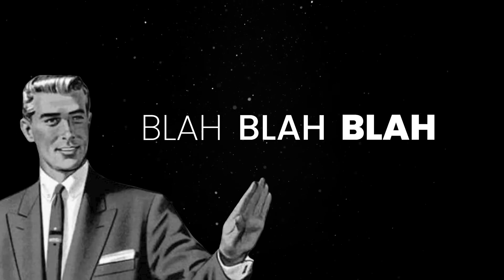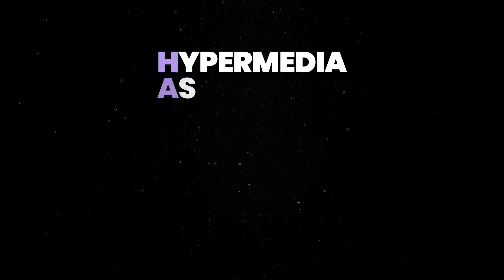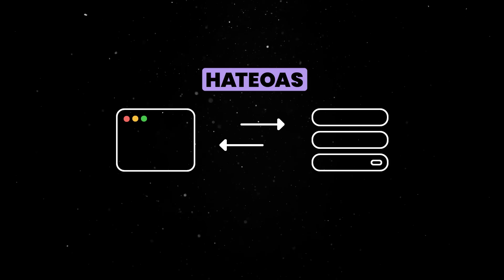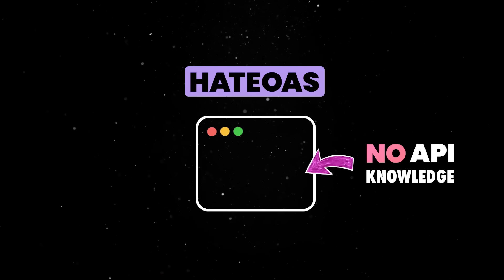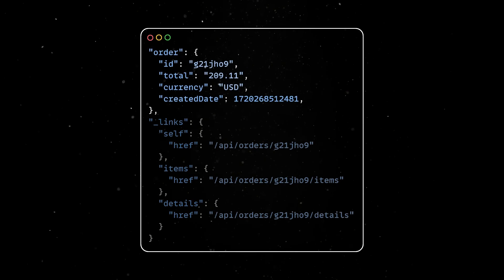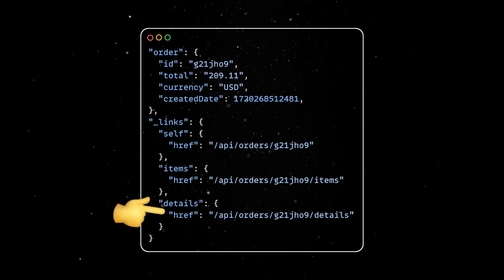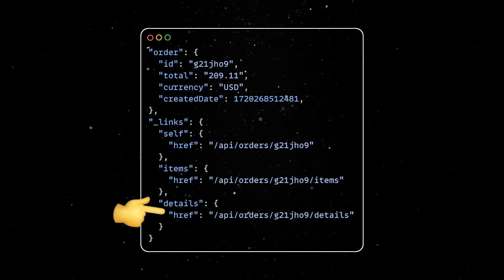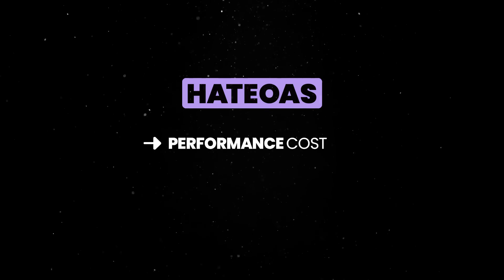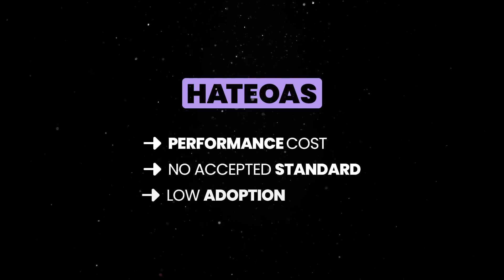After all this theory, we are still at the second level of maturity. For your API to reach its final form, it needs to follow the Hypermedia as the Engine of Application State (HATEOAS) principle — the client interacts with the application entirely through hypermedia provided dynamically by servers. A REST client needs no prior knowledge beyond a generic understanding of hypermedia. In practice, server responses contain not only requested data but also hypermedia links to related actions. However, this principle comes with disadvantages: performance costs for high-request APIs, no widely accepted standard, and a fairly low adoption rate.